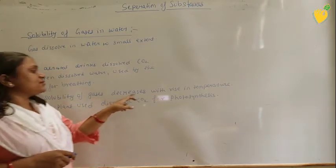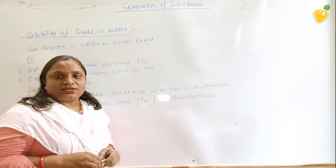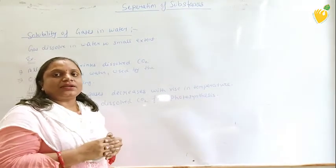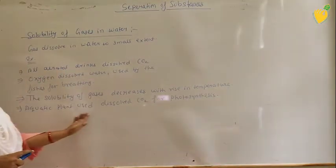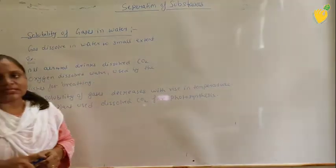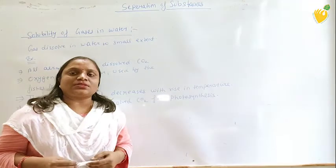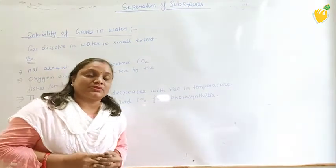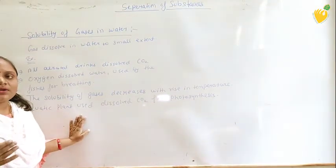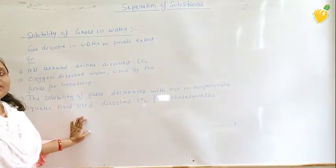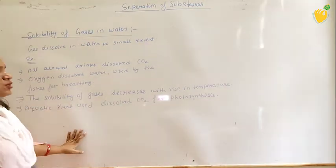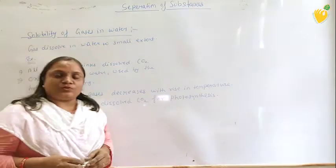The solubility of gases decreases with a rise in temperature — if the temperature rises, the solubility of gases in liquid decreases. Aquatic plants use dissolved carbon dioxide. You know the process of photosynthesis — plants use carbon dioxide to prepare their food. Aquatic plants use the carbon dioxide dissolved in water for the process of photosynthesis.